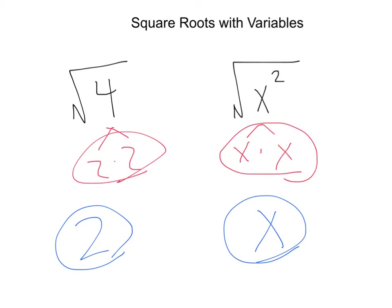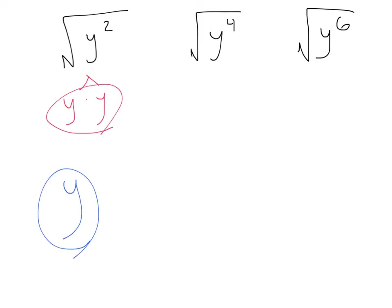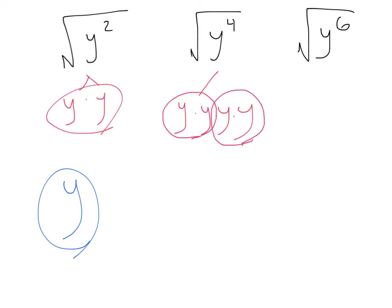Let's check out some more. Here we've got square root of y squared. We could break that down — that's y times y. I have a pair right here, so my answer would be y. Next we've got square root of y to the fourth. That y to the fourth is y times y times y times y — four y's. If we find pairs, we've got one pair and one pair, which means our answer is y times y, or y squared.